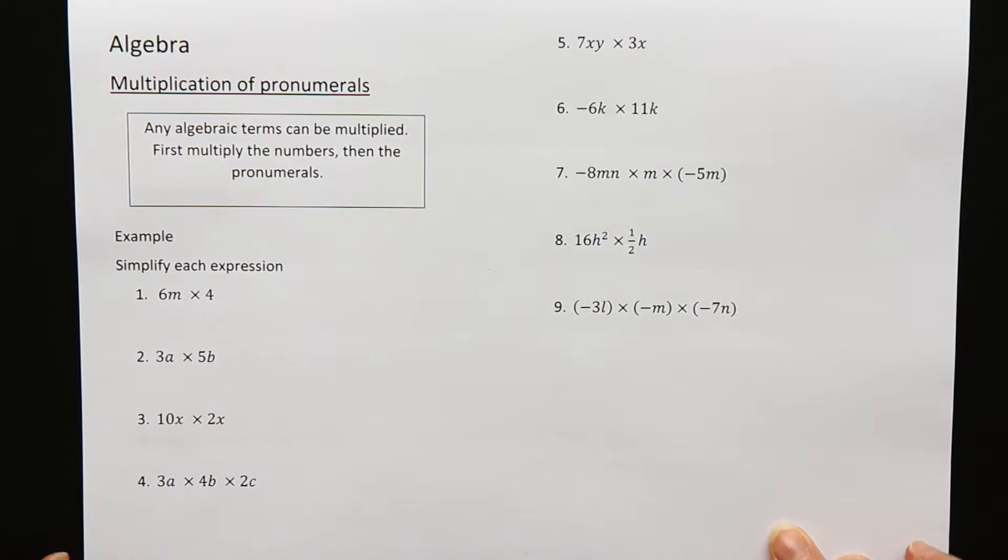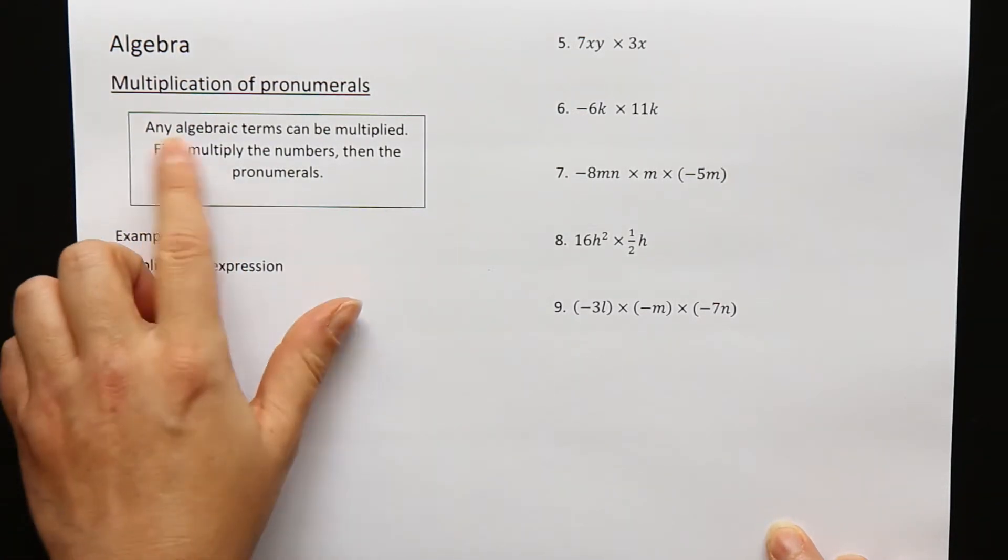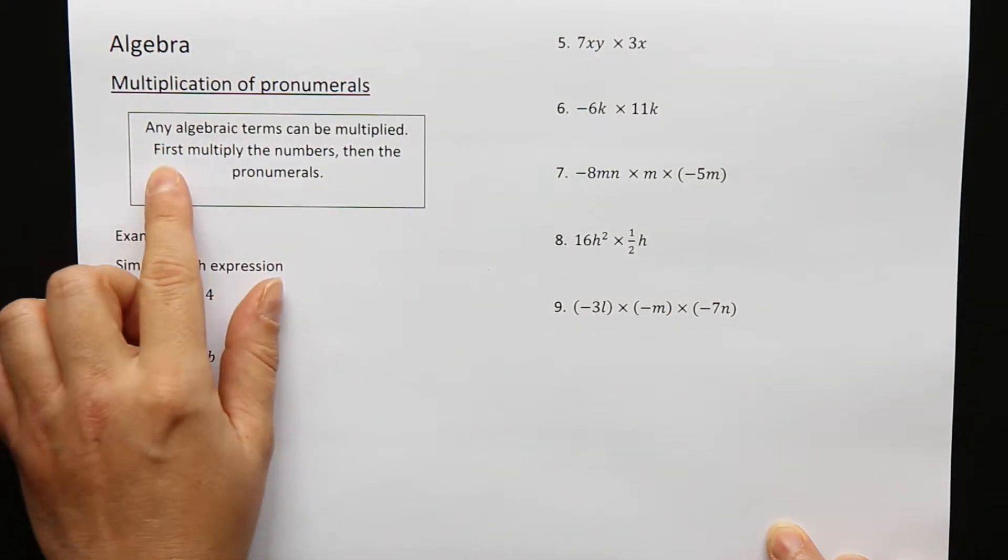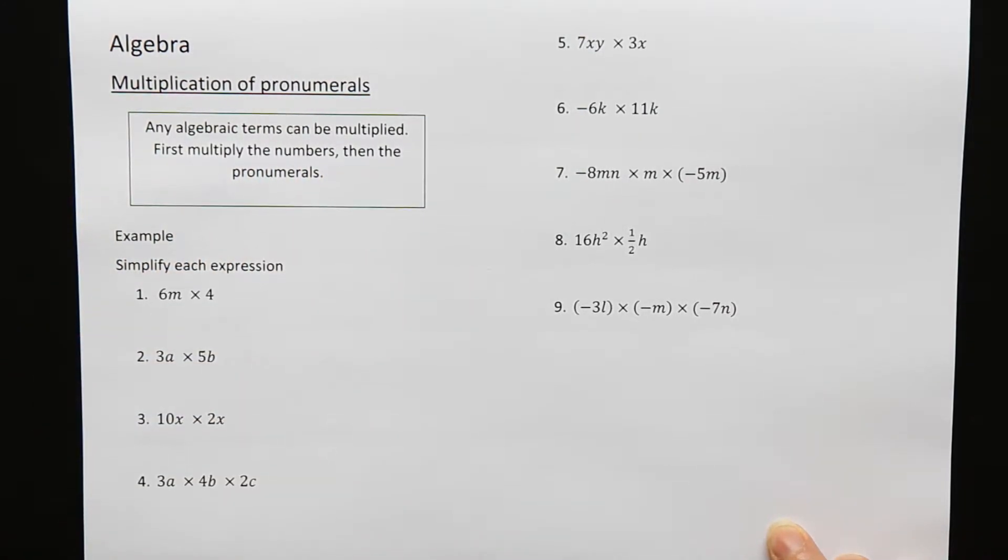Last time I did a lesson on algebra, we did addition and subtraction. When you're doing addition and subtraction, you have to have like terms. But today, doing multiplication, you can multiply any algebraic terms. To do that, first of all you multiply the numbers and then the pronumerals.